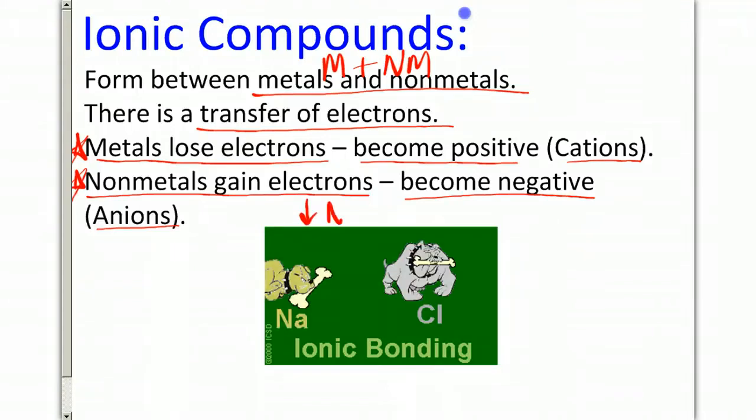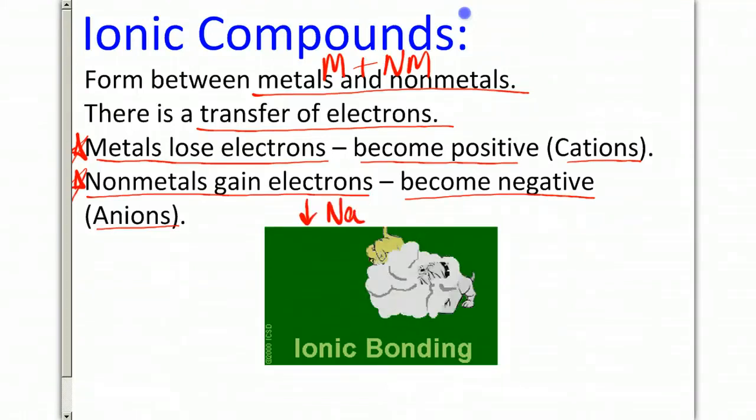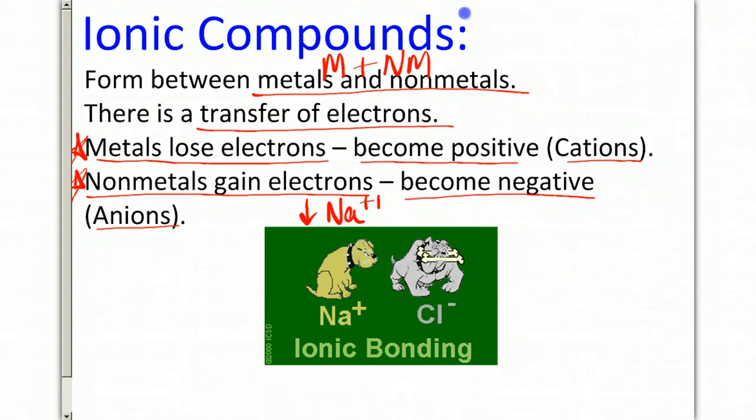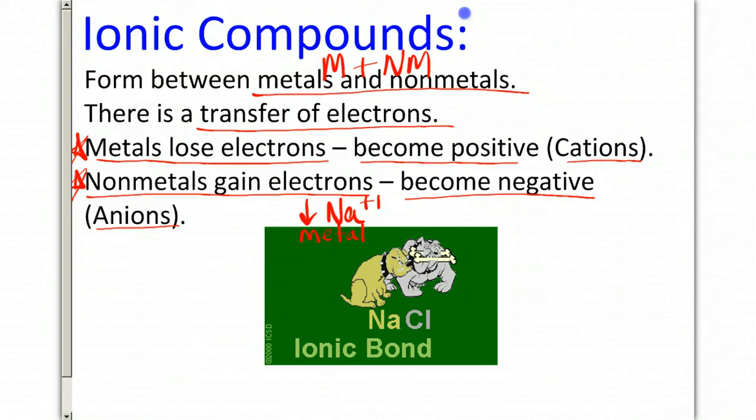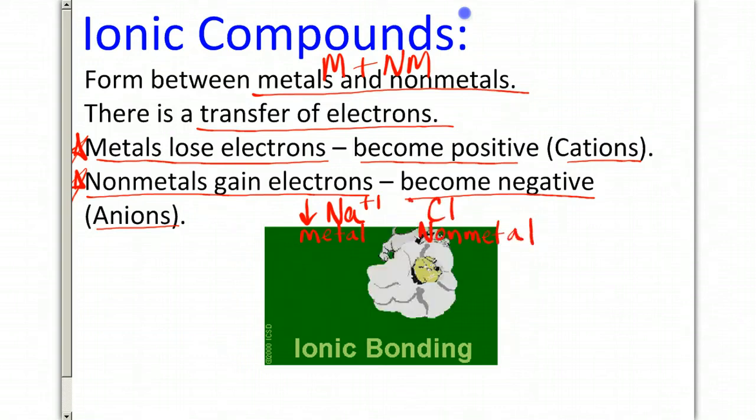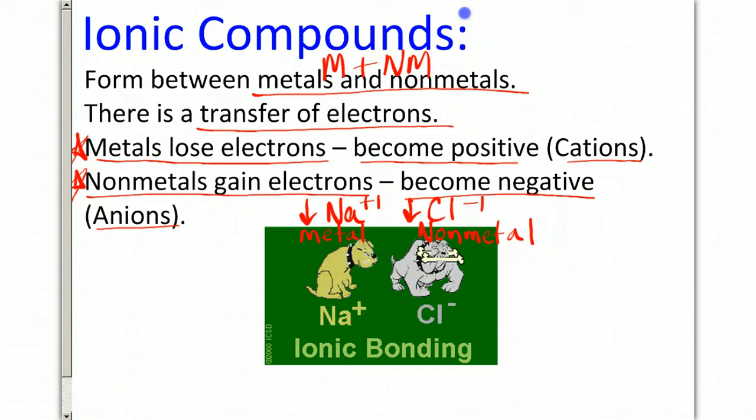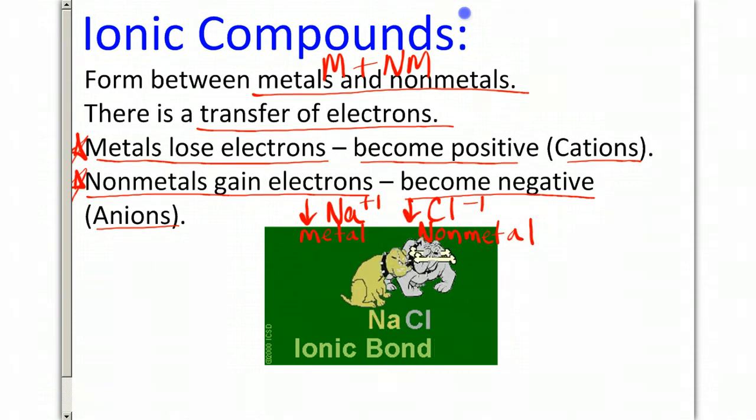Notice in our example here, we have sodium, which loses and becomes positive. That's my metal. And then I have my non-metal, which is chlorine here. And the chlorine gains and becomes a negative one charge.